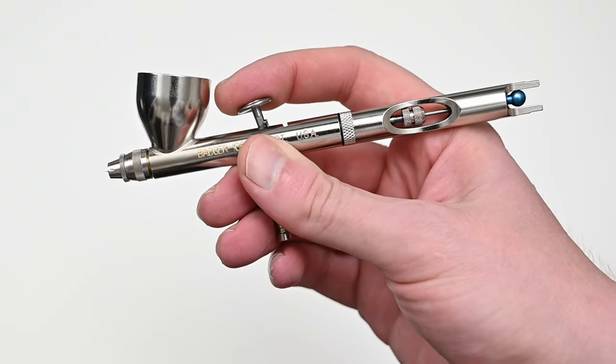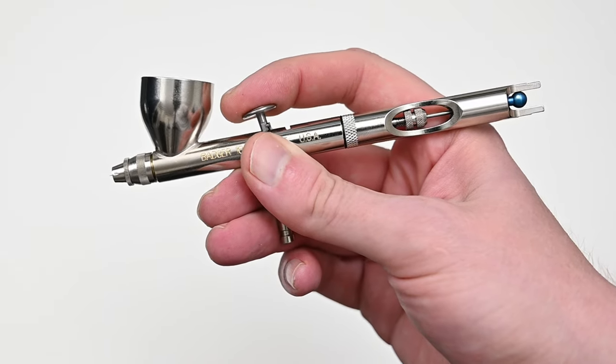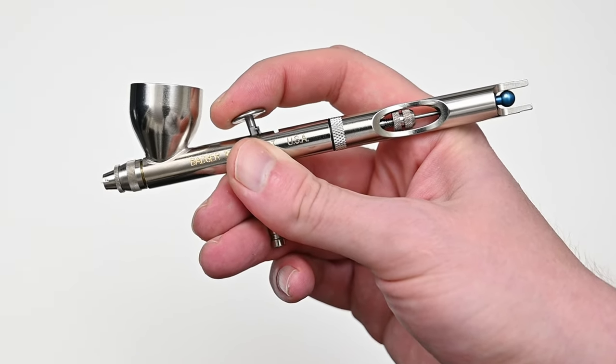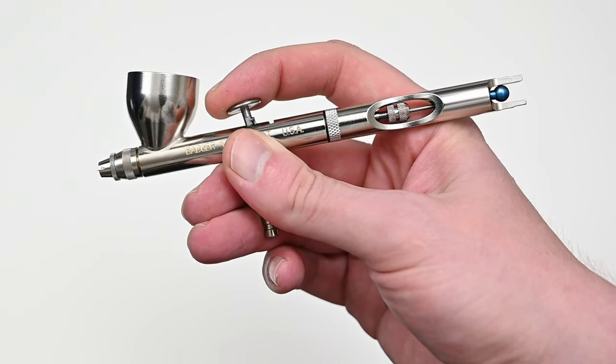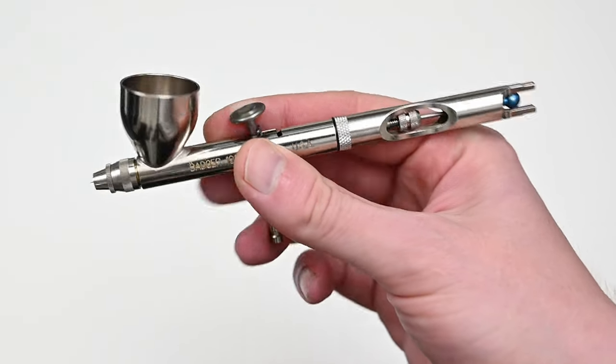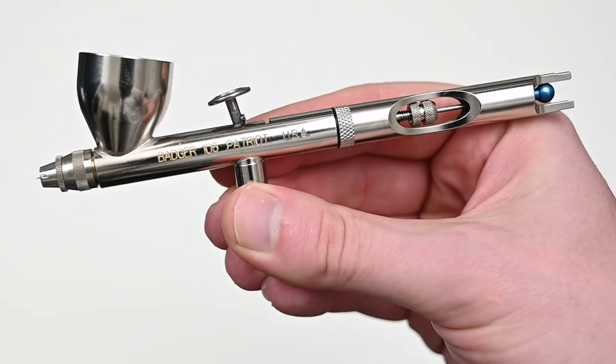The Patriot 105 is not designed for small intricate work but you're still able to do some with it. If you really want detail make sure you look at the Sotar 2020, the Iwata Micron, or the GSI Kreos PS771.